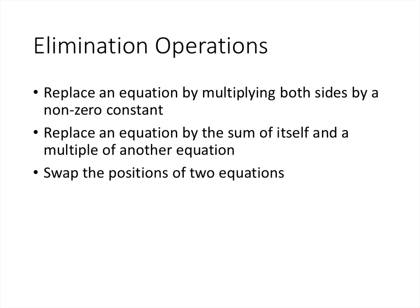This next operation is a bit tricky: replace an equation by the sum of itself and a multiple of another equation. So if we had equation 1 and replaced it with equation 1 plus R times equation 2, why is that reversible? Because the new equation 1 equals the old E1 plus R times E2, so all we need to do is take that new E1 and add negative R times E2, which cancels out what we just did and returns us to the original equation 1. So that step is reversible.